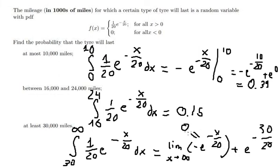Any number divided by positive infinity goes to zero, so that term vanishes. The final answer is e to the power of negative 30 over 20, which equals 0.22.